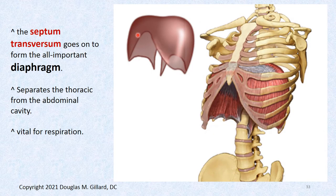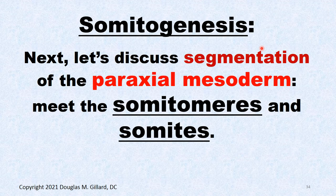So the liver actually arises from the primitive diaphragm, which is called the septum transversum — make a note card of that. The diaphragm is like a dome; when you take a deep breath in, it contracts and pulls the lungs down, creating negative pressure inside the lungs that sucks air in. When you breathe out, you relax the diaphragm and air is pushed out. It's vital for respiration.